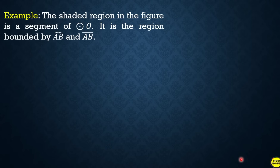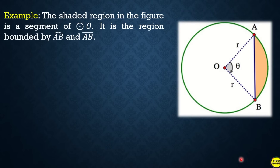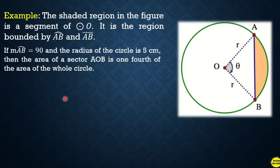Another example: the shaded region is a segment of circle O, bounded by chord AB and arc AB. If the measure of arc AB is 90° and the radius of the circle is 5 cm, then the area of sector AOB is 1/4 of the area of the whole circle.